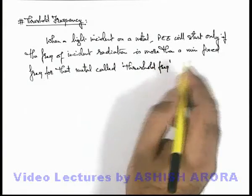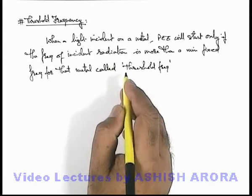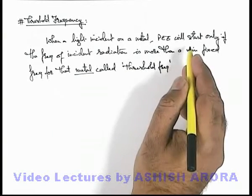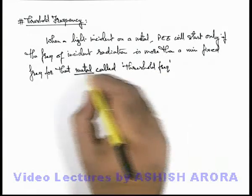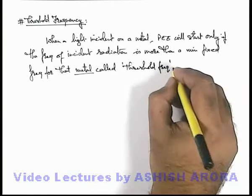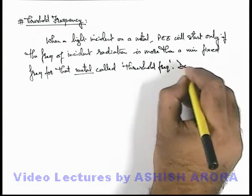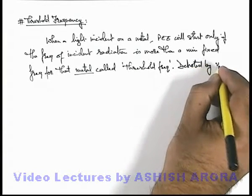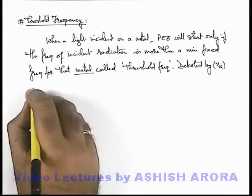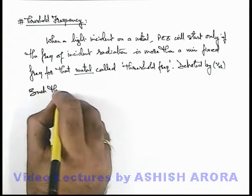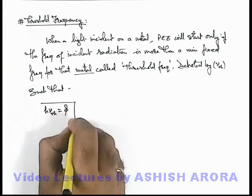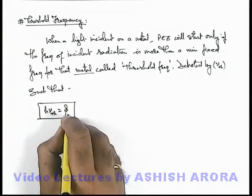So threshold frequency is a minimum fixed frequency which is specified for a metal, and to start photoelectric effect the incident light frequency must be more than this threshold frequency. It is denoted by the symbol nu_th such that h nu_th is equal to phi, which is the work function of the metal surface.